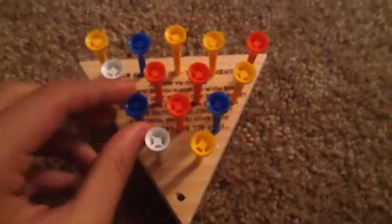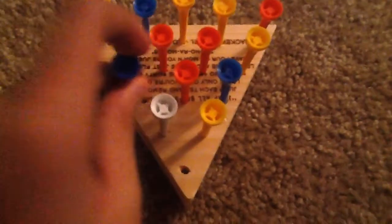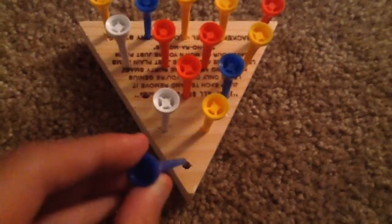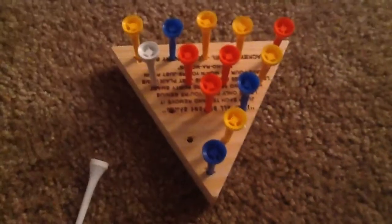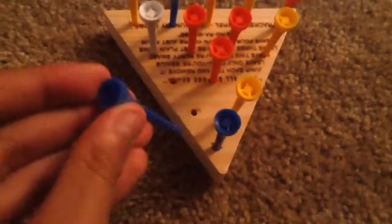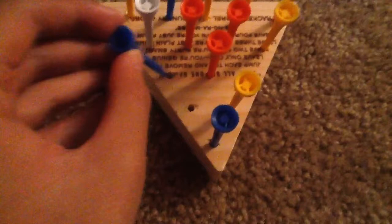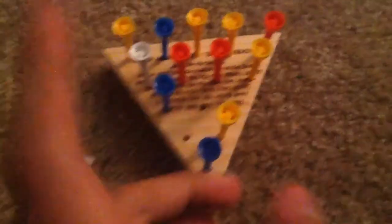So you jump a tee and then you, like for example, if you move this one, then jump that one out. And then you can move to the middle. You can go in any direction. I'm not going to waste too much time on the directions. So basically you're going to just keep jumping tees until you get only one.